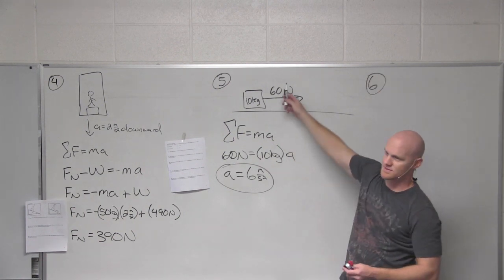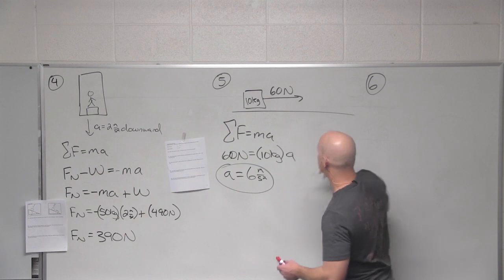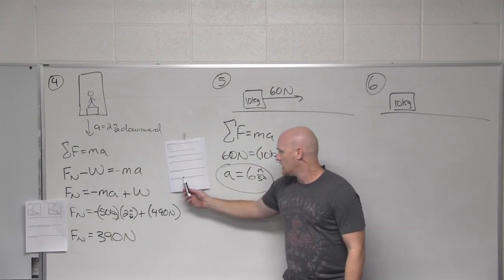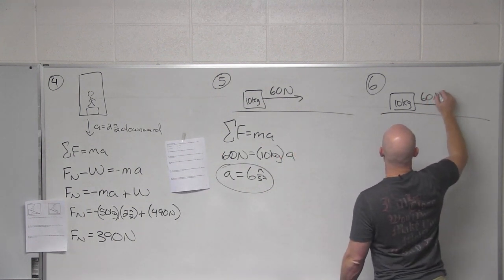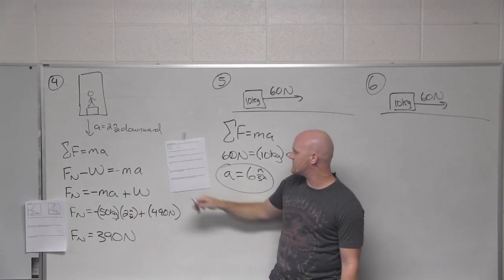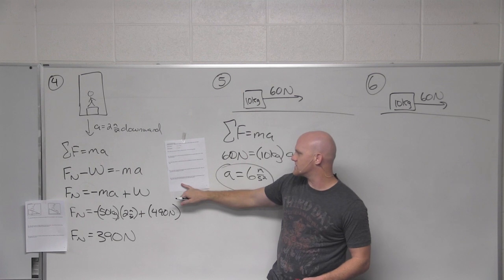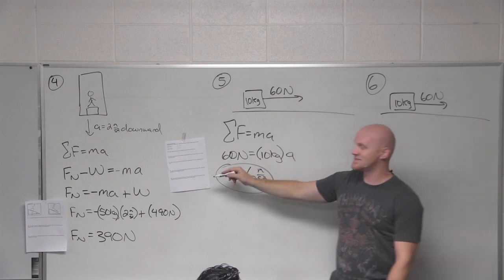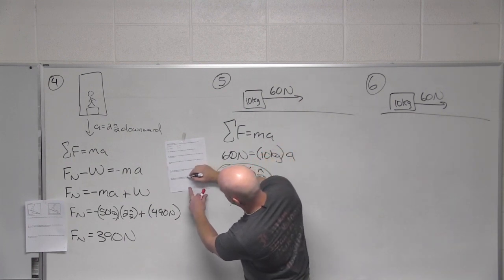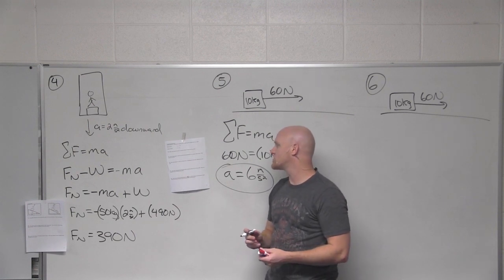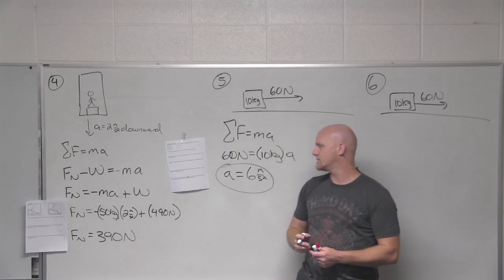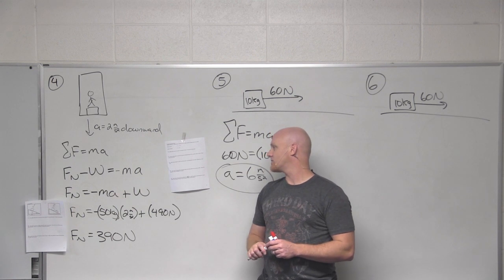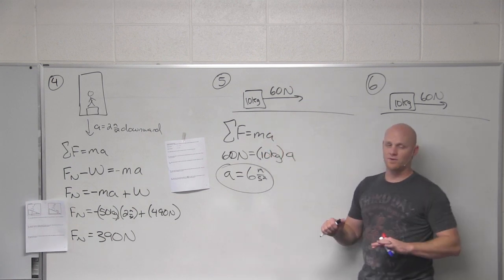So number 6, building right off of number 5 here. Now we have a 10-kilogram object yet again with a net force of 60 newtons, resulting in a net acceleration of 4 meters per second squared. Hold on, I'll change it on the handout. Take off the word net and just have it say force. 10-kilogram object is being pulled horizontally with a force of 60 newtons, resulting in a net acceleration of 4 meters per second squared. And the question is, what is the coefficient of kinetic friction between the object and the surface?